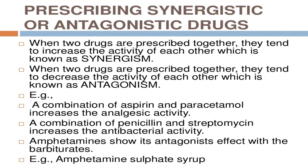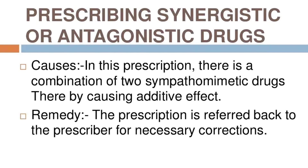When two drugs are prescribed together and they tend to increase the activity of each other, this is known as synergism. When two drugs are prescribed together and they tend to decrease the activity of each other, this is known as antagonism. For example, the combination of aspirin and paracetamol increases analgesic activity — that is a synergistic effect. The combination of penicillin and streptomycin increases antibacterial activity. Amphetamine shows an antagonistic effect with barbiturate. In the example of amphetamine sulfate, the prescription contains a combination of two sympathomimetic drugs, thereby causing an additive effect, and the remedy is that the prescription is referred back to the prescriber for necessary correction.